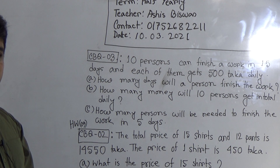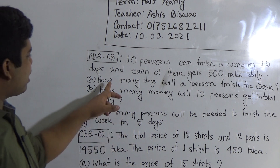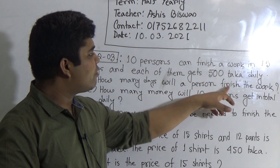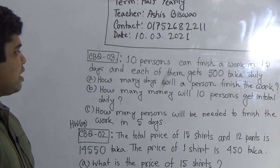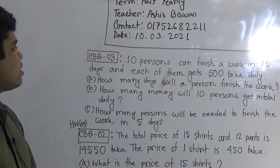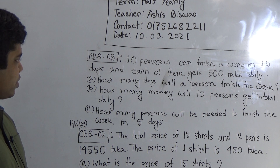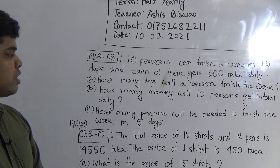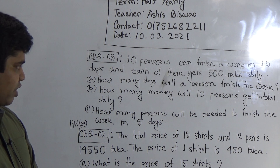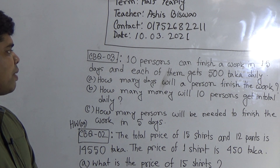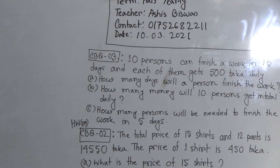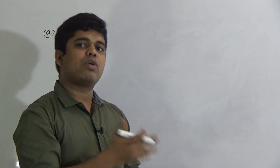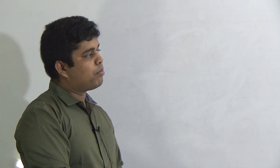Before starting to solve, we make a plan. For question a — how many days will one person need to finish the work? Notice: 10 persons can finish a work in 15 days. We use this information to find the required number of days for one person. So first we write: 10 persons can finish a work in 15 days.